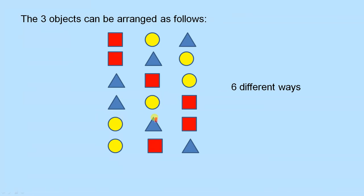Then we have the circle first, and those 2. Keep the circle first, and swap those 2 around. So, you can see quite clearly, there are 6 different ways of arranging those 3 objects.